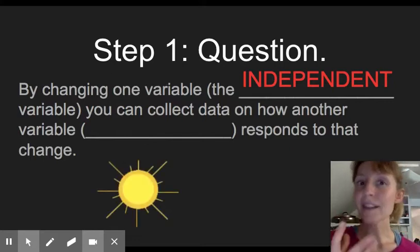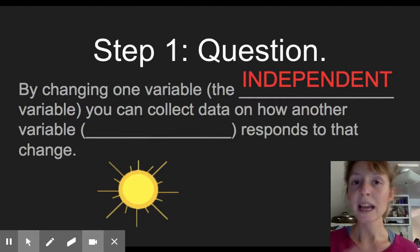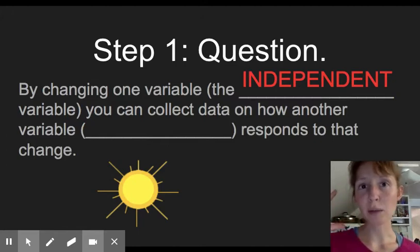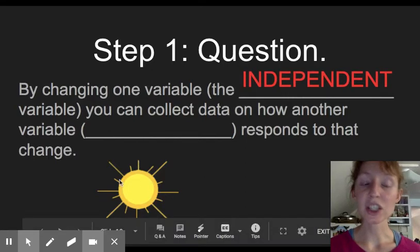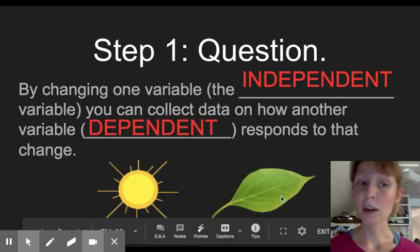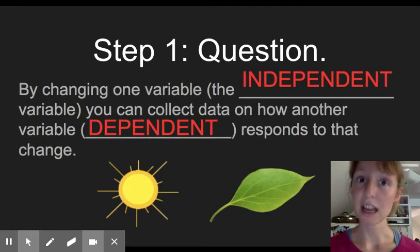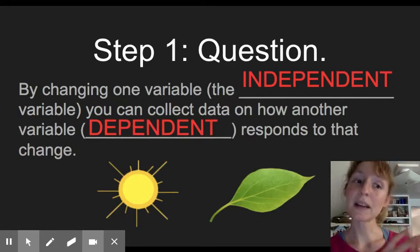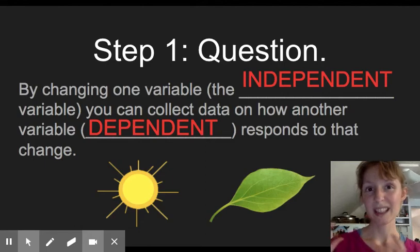So with the light affecting plant growth, light is independent because it's not like plants growing a lot will cause there to be more light. The light is the one that we're going to change, the amount of light, and you collect data on how the other variable, the dependent variable, plant growth, would respond to that change. So one more time, light would be independent, plant growth would be dependent because it depends on light to grow.